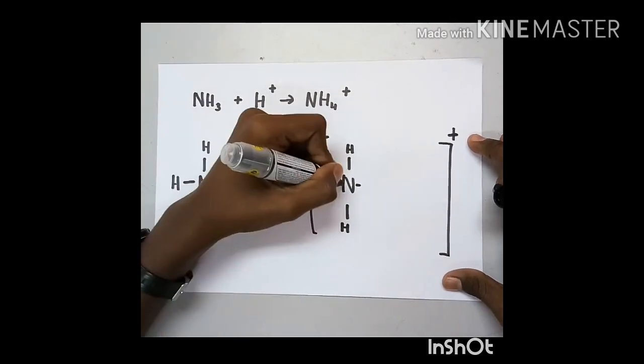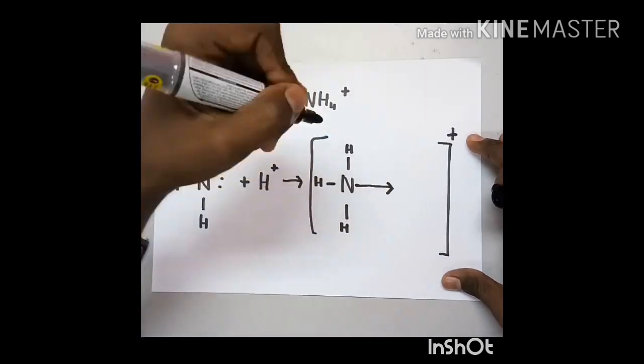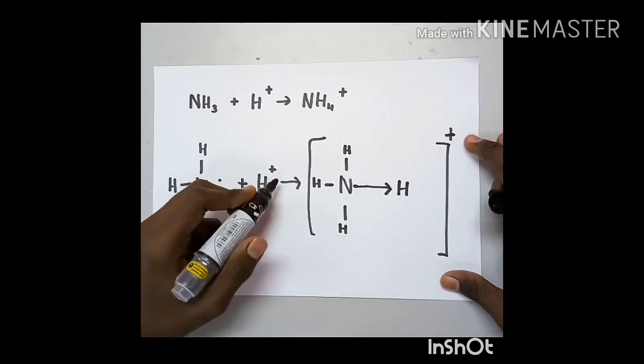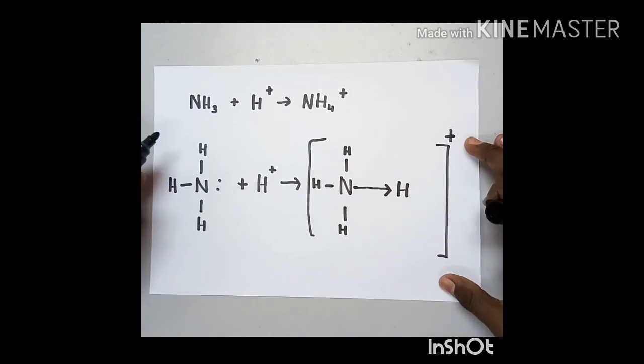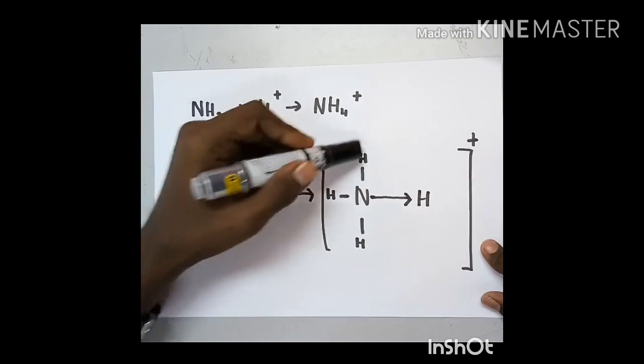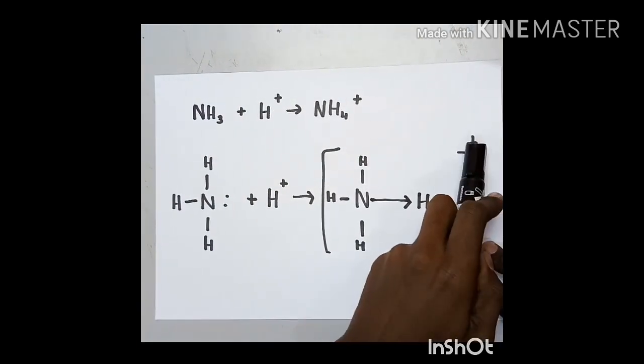The electron from the nitrogen, from the ammonia, is donated towards the hydrogen. This is the formation of the dative bond for the ammonium ion. Since the hydrogen ion consists of positive charge, the ammonium ion will also consist of the positive charge.